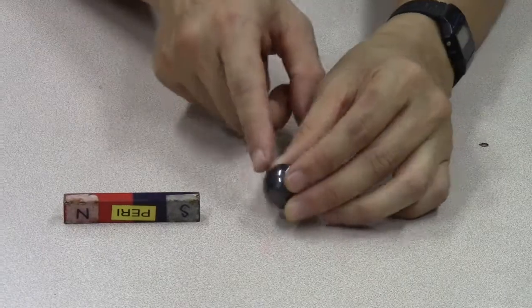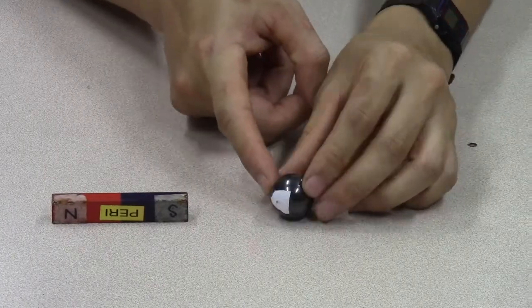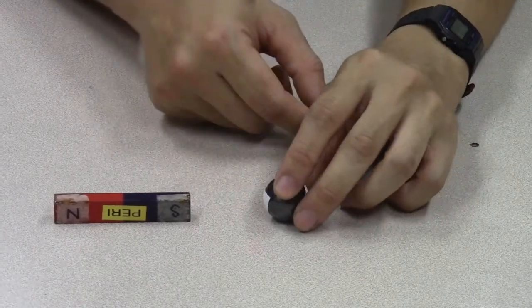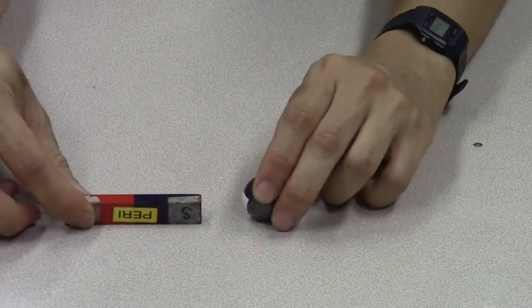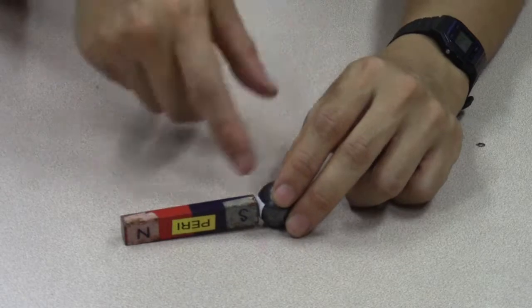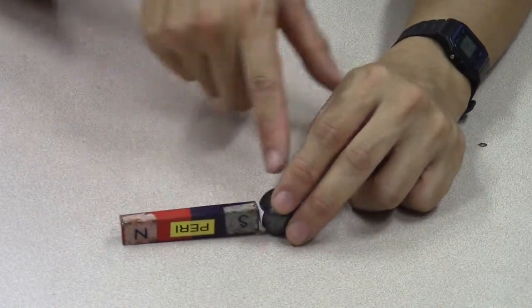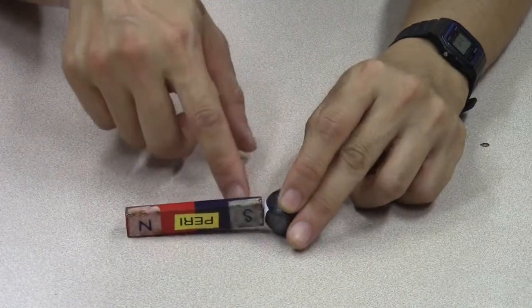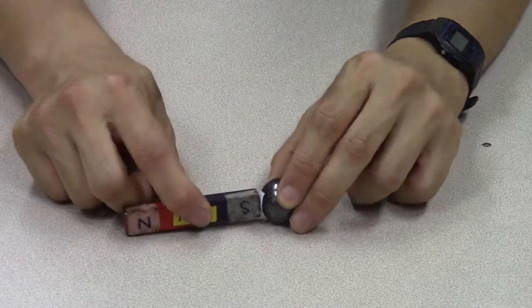And if I turn the magnet around, I bring the other side of it near to the bar magnet. I'm going to hold on to it so it won't slam together. It's going to attract and stick together. So if this is the south pole of the bar magnet, the ball magnet, the part of it that's touching the bar magnet must be the north pole.